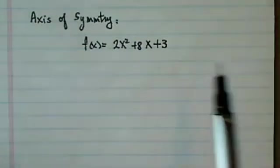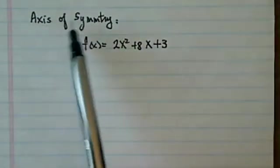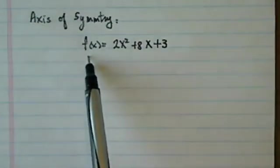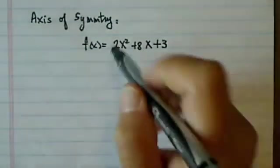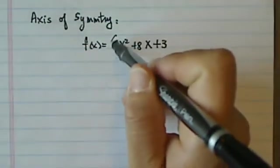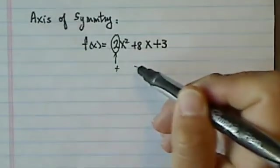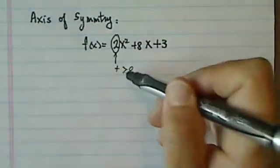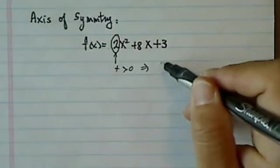I hope life is treating you well, and thank you for watching this clip on finding axis of symmetry. Here we have a quadratic equation. Basically, because this one is a positive number, or bigger than zero, we have a parabola facing up.